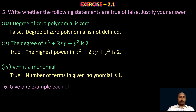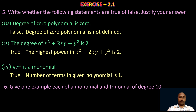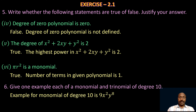Let us take the sixth problem: give one example each of a monomial and a trinomial of degree 10. An example of a monomial of degree 10 is 9x²y⁸. In this polynomial we have only one term, so it is a monomial. The degree is 2 + 8 = 10, where 2 is the exponent of x and 8 is the exponent of y.